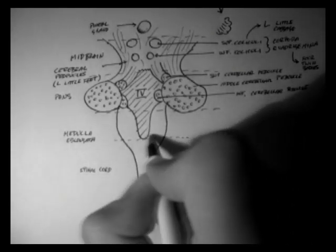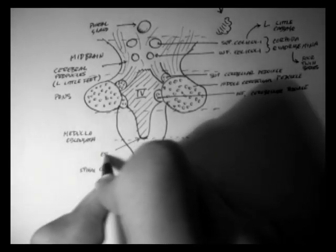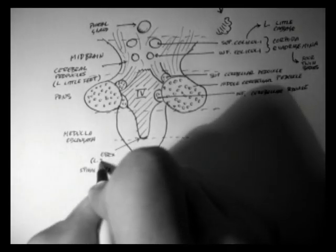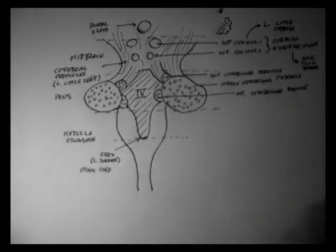Now right down here at the bottom of the fourth ventricle we have the obex. Obex is Latin for barrier, and it's the most bottom part of the fourth ventricle. It also marks the bottom of the medulla and the top of the spinal cord.